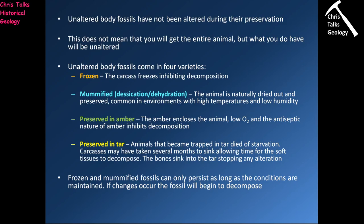Unaltered body fossils occur in four varieties. Frozen body fossils are where the carcass freezes, which inhibits decomposition — this happens in areas with very cold environments. Mummification technically means desiccation or dehydration — in this context the drying out of the carcass. This occurs where an animal carcass is in a hot environment with relatively low humidity, so desert environments are a primary example.